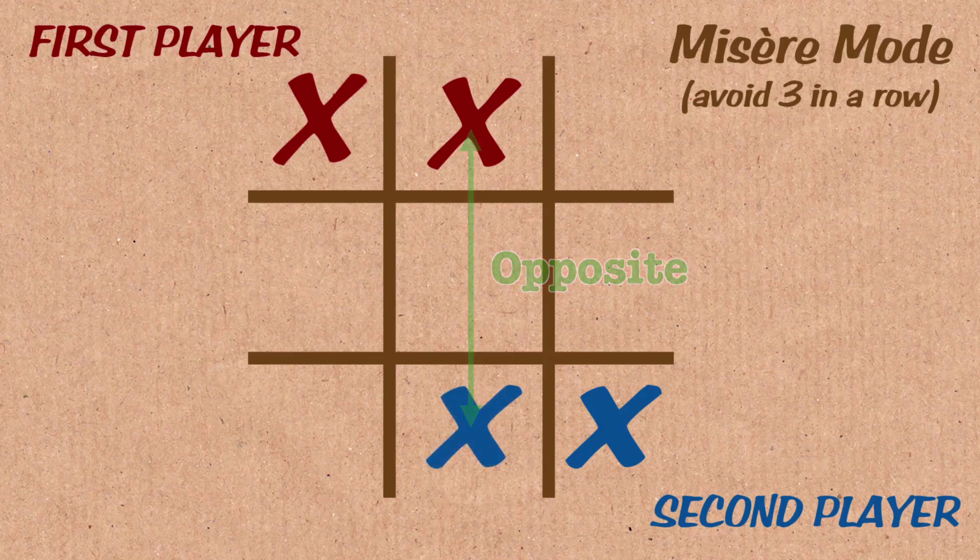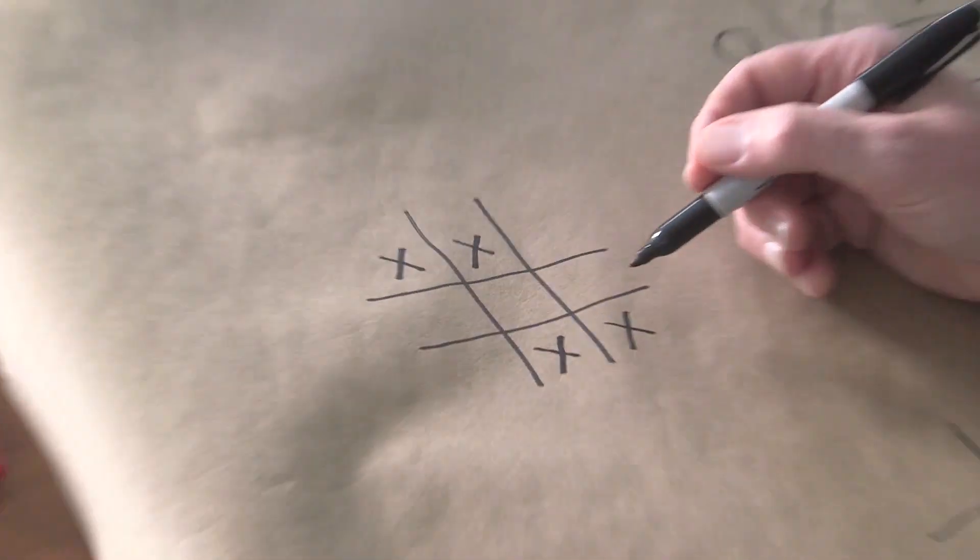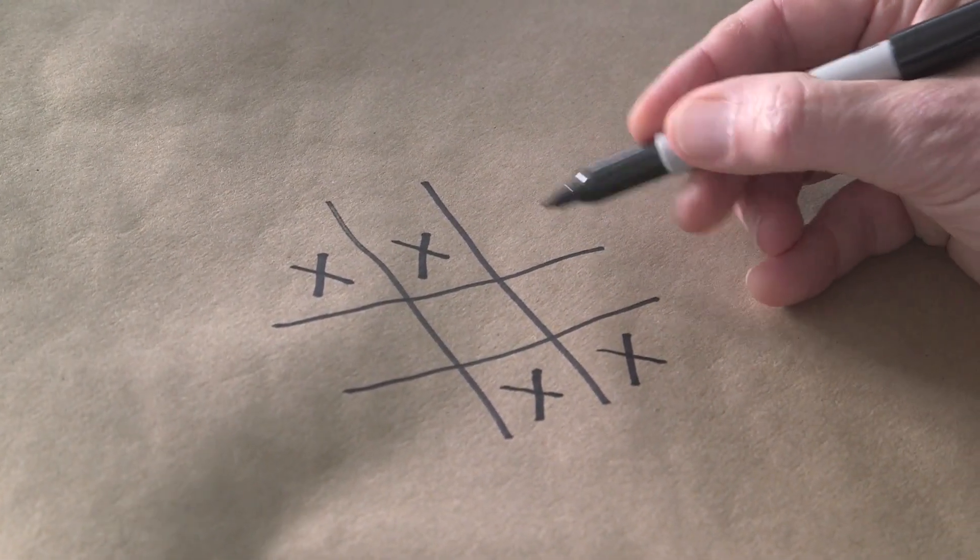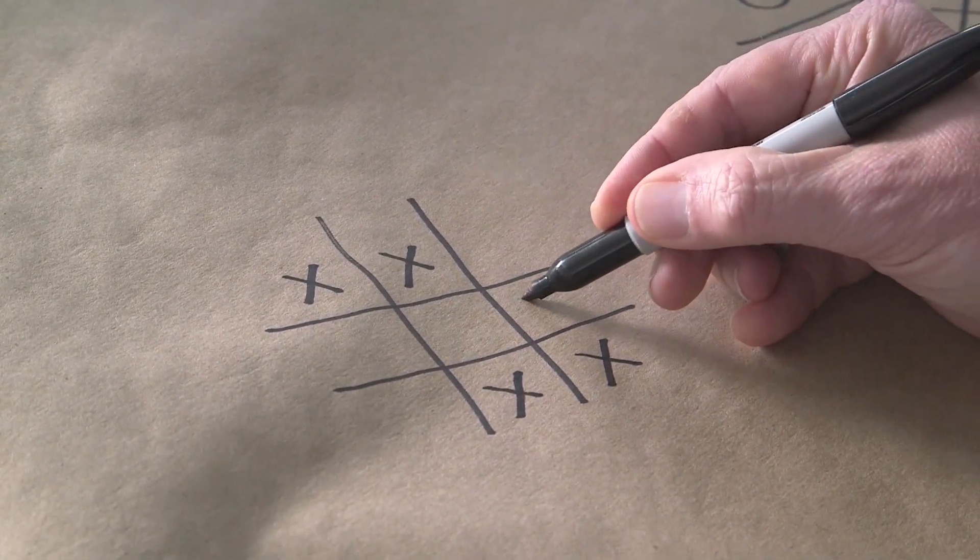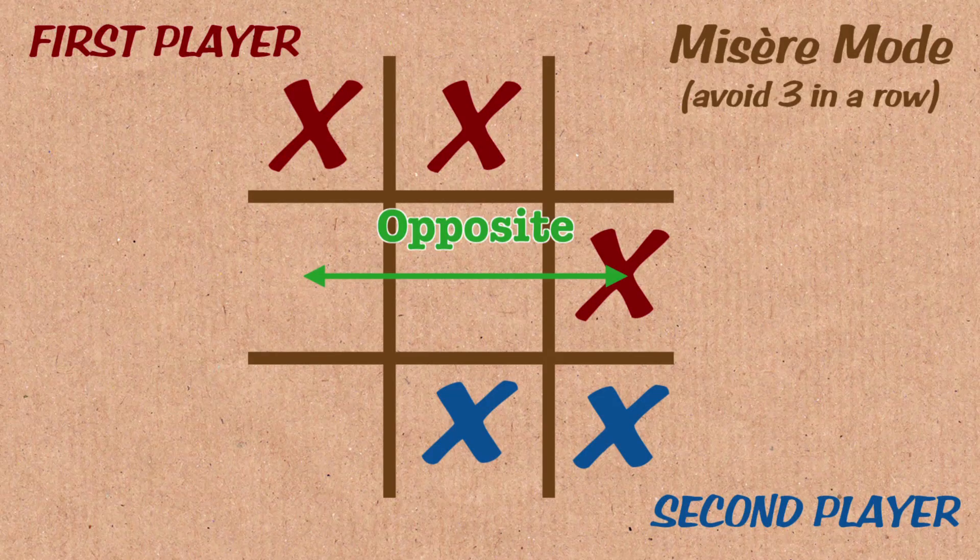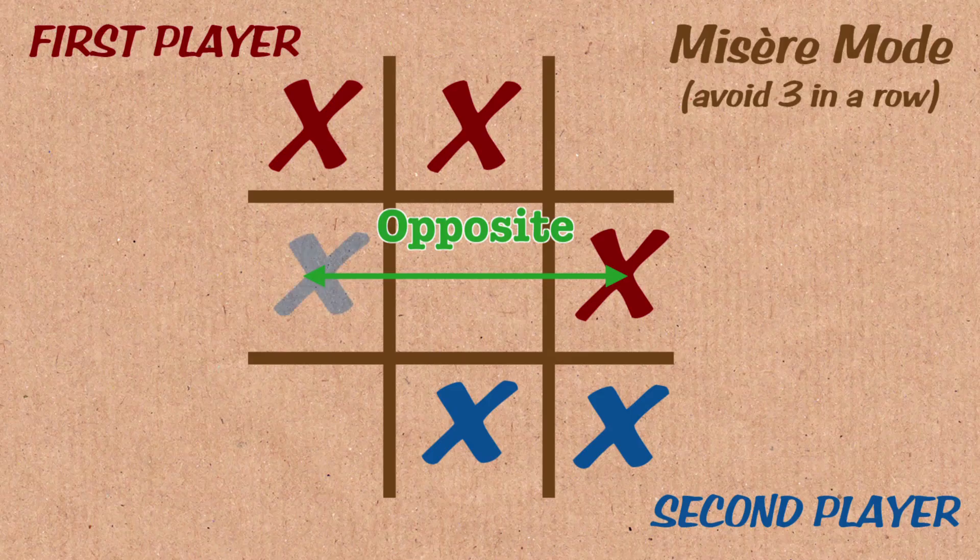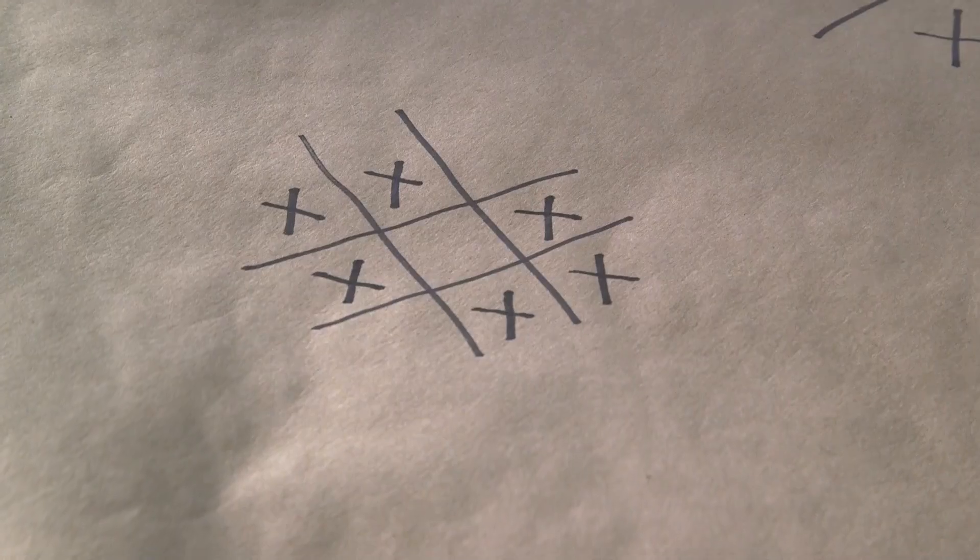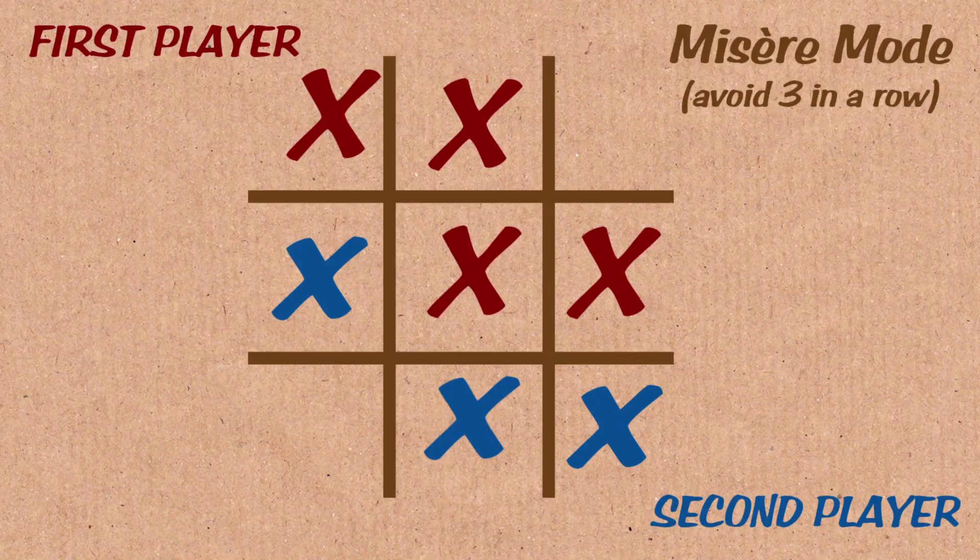Now the first player has another move, doesn't want to move in the center, but now let's say he certainly doesn't want to move here because that loses, but so perhaps he plays here. But then again, on the opposite side of the board, there's an empty square. So the opponent will play here, and now the first player has to lose. Every move makes three in a row.